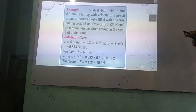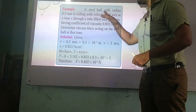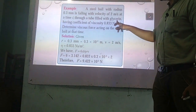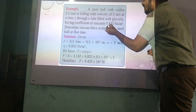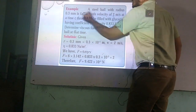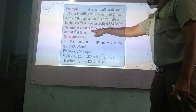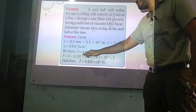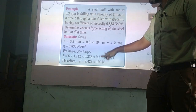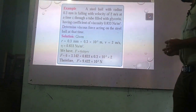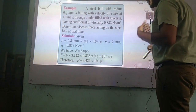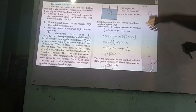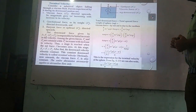A numerical example: a steel ball with radius 0.3 mm falls through glycerin. Given the coefficient of viscosity eta, velocity v, and radius r, the viscous force Fp is calculated using F equals 6π·eta·r·v. Just substitute the given values and multiply to get the answer — a straightforward application of Stokes' law.